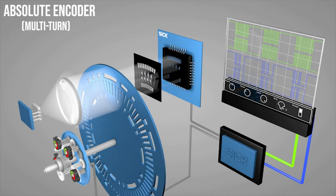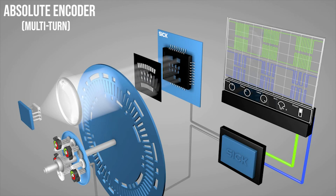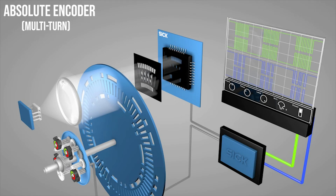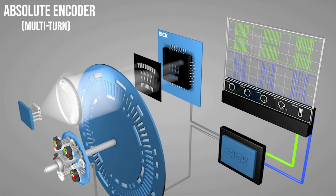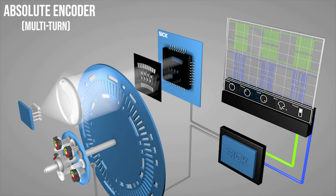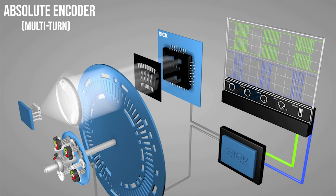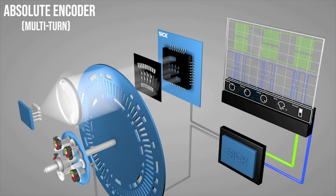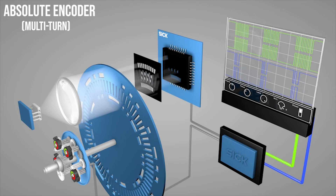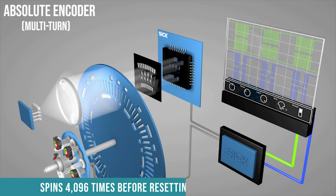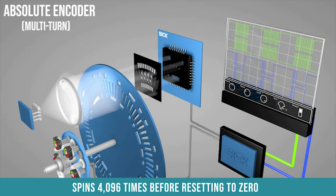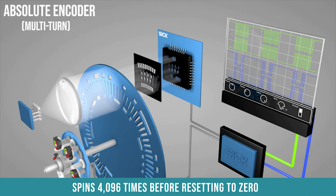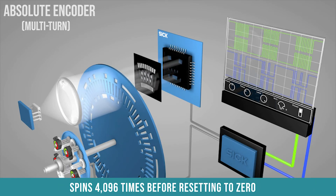In essence, the drivetrain records how many times the encoder shaft has turned, giving you up to 12 bits of numbers of rotations, effectively meaning an absolute encoder shaft can spin 4096 times before resetting to zero.